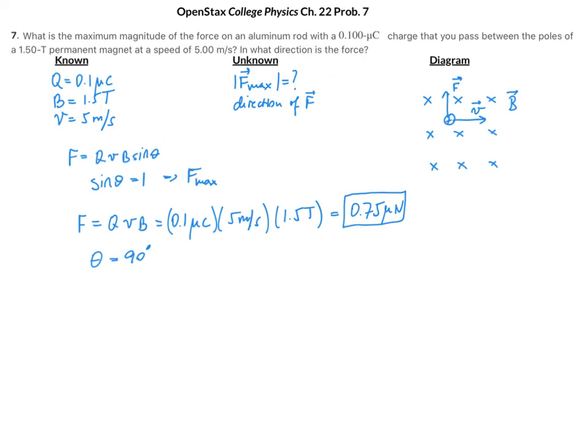The only answer that rings true for all of these situations is the force is perpendicular to both the velocity and the magnetic field. So F is perpendicular to the velocity and F is perpendicular to the magnetic field, always. This is the answer to the second question.